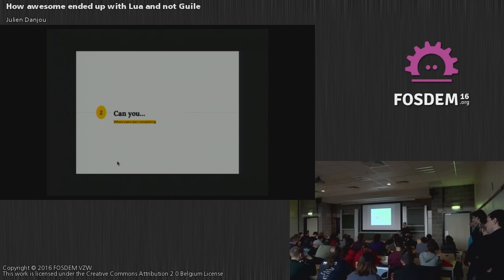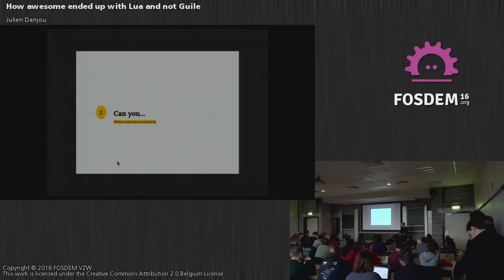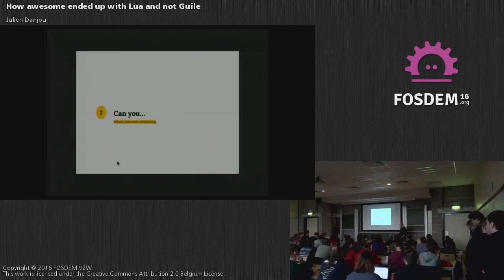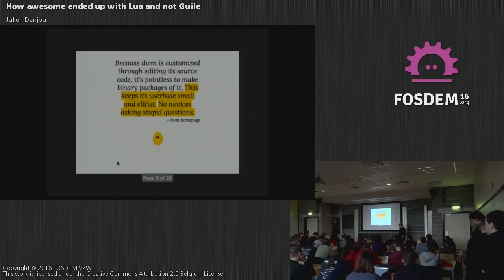I started to have users because people were kind of happy not to maintain their own patches anymore. People started to use Awesome because it was like DWM but better, with more features and with a configuration file — which is very handy when you want to change things without recompiling everything. It was more easy to maintain, packaged in Debian, and easier to use than DWM.